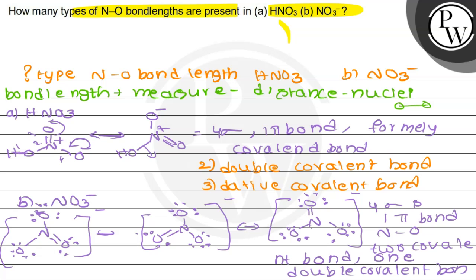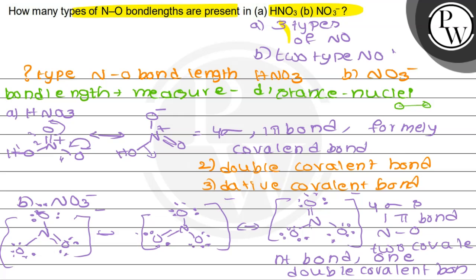So these are the two single covalent bonds and the double bond O is the double covalent bond. How many types of NO bond lengths are present in HNO3? That is: one formal covalent bond, one double covalent bond, and one dative covalent bond — so in HNO3 three types of NO bond lengths (option A). Whereas in NO3- (option B), there are two single covalent bonds and one double covalent bond — two types of NO bond lengths. The final answer: HNO3 (A) has three types of NO bond lengths; NO3- (B) has two types. Hope you understood well. Best of luck, thank you so much.